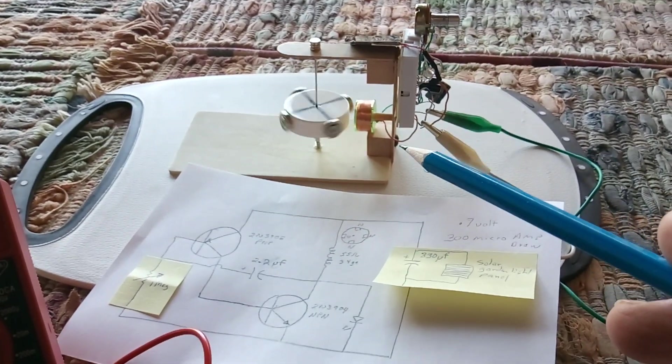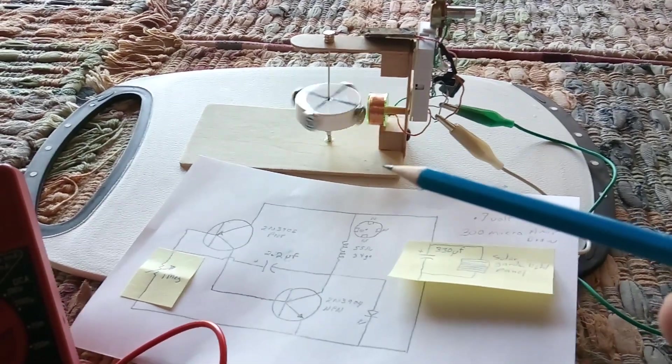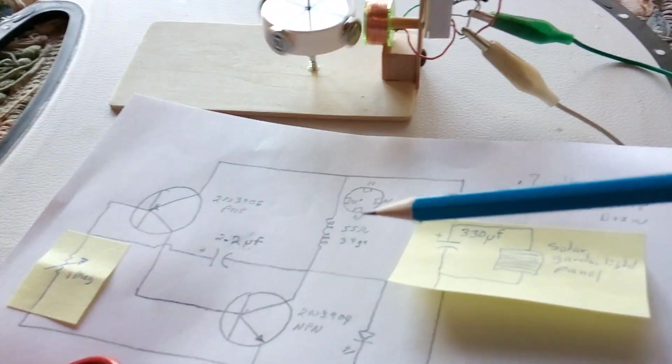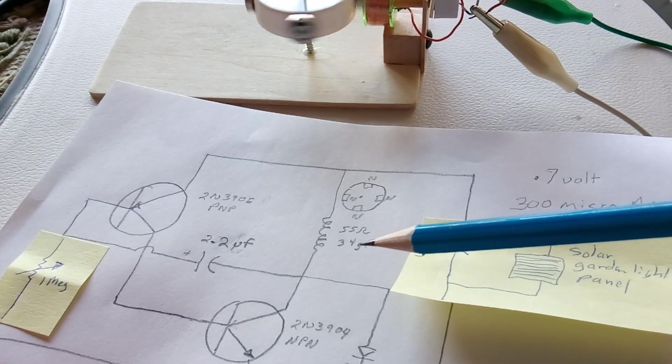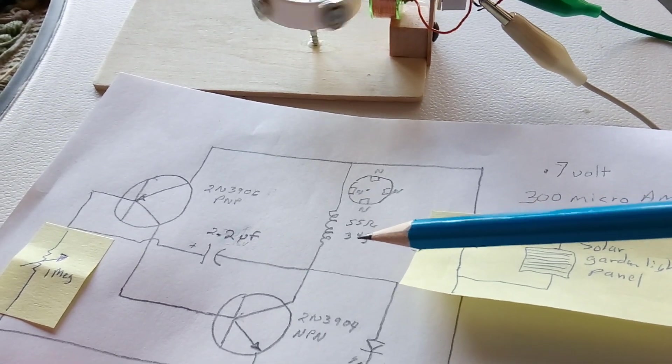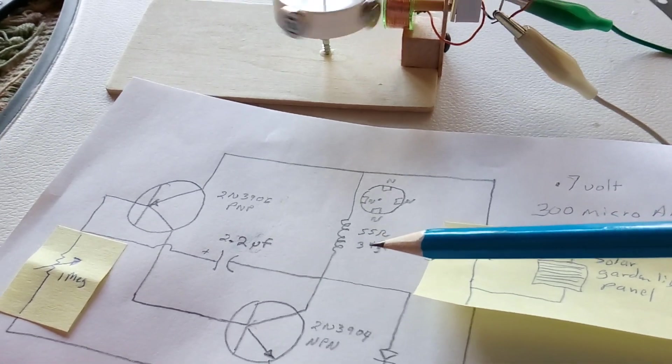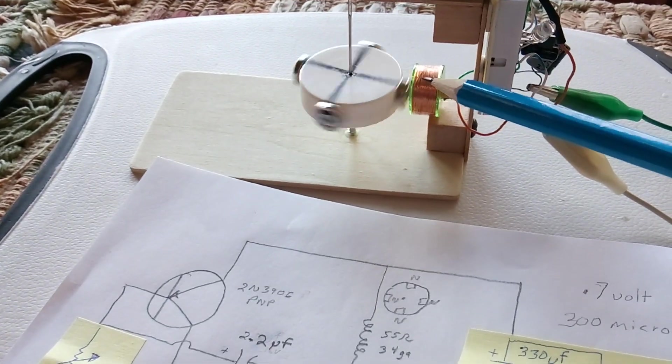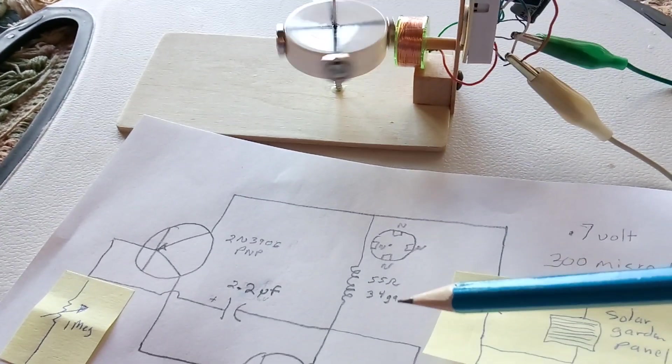And really, the reason for this video that's so stunning is this is not a fine wire coil. This is 34 gauge. This isn't one of those 40 gauge hair fine coils. That coil there is not fine wire—this is 34 gauge.